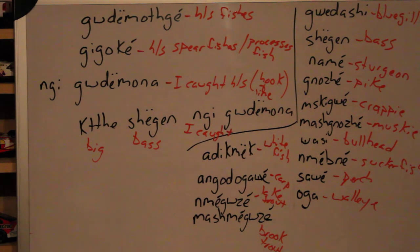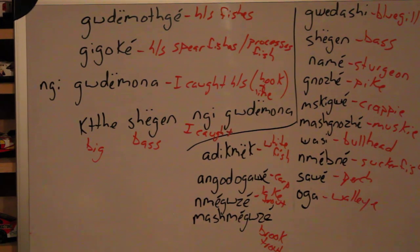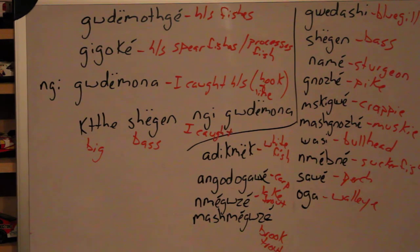Kodashi, kodashi — a bluegill. Shagun, shagun — a bass. Name, name — sturgeon. Gnozhe, gnozhe — a pike.